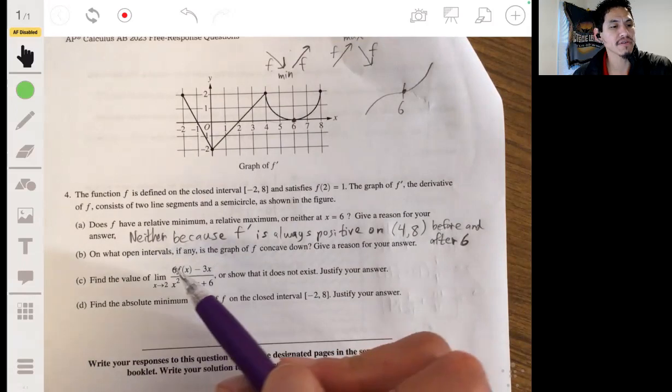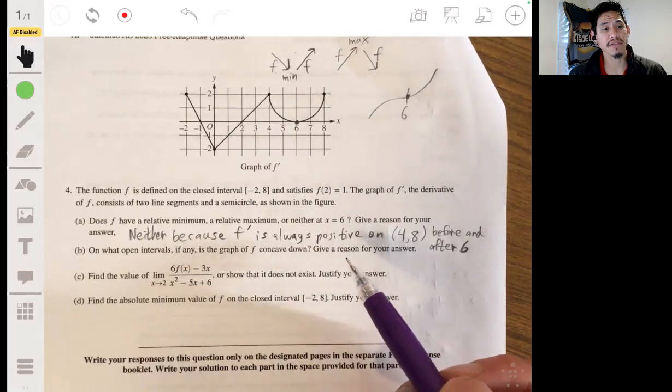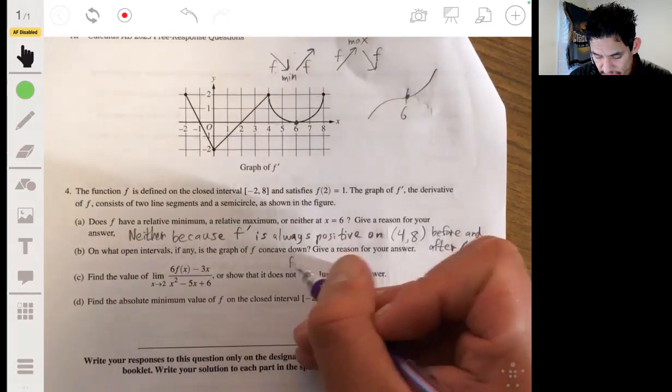But keep it simple, straightforward, because they want to just basically see that you don't get fooled with this being f. All right. So, part b, on what open intervals, if any, is the graph of f concave down? Give a reason for your answer. Okay. So remember, graph is concave down when the second derivative is negative.